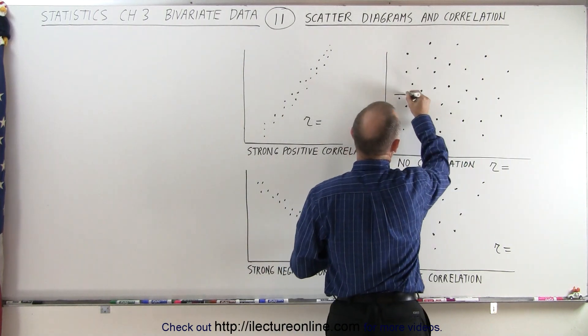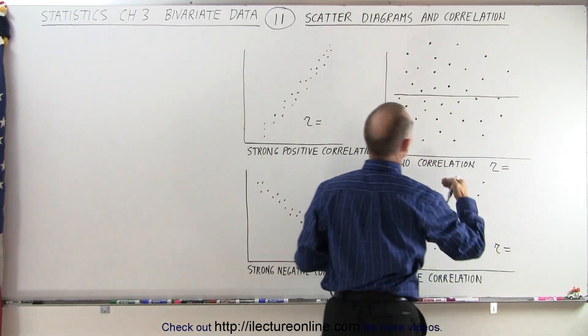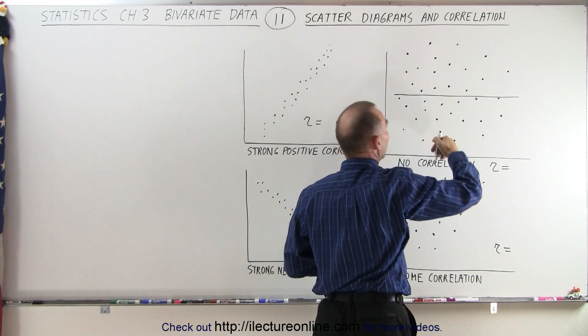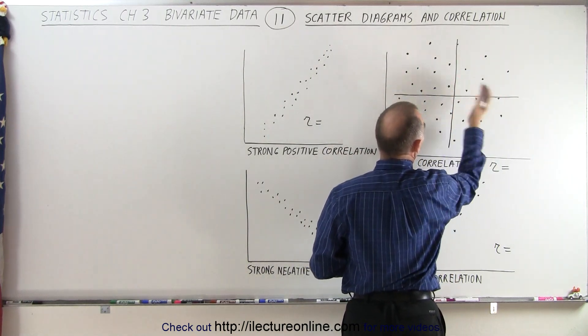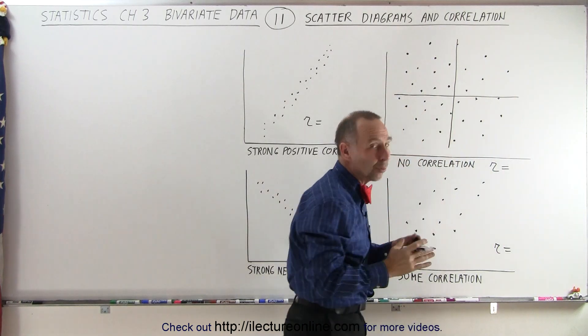For example, I could draw the best fit line like this, and I have about the same data points below the line. I could draw the best fit line like this, and I have about the same number of points on the left or the right, or at any angle.